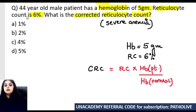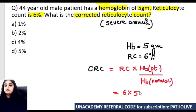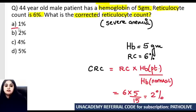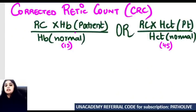The formula for corrected retic count is: reticulocyte × (hemoglobin of patient ÷ hemoglobin of normal). For a 44-year-old adult male, ideal hemoglobin is taken as 15. So: 6 × (5 ÷ 15) = 2%. The answer is 2%. That is the corrected reticulocyte count.